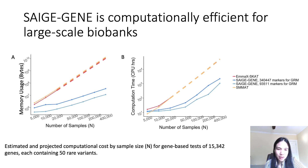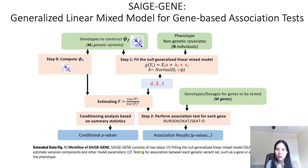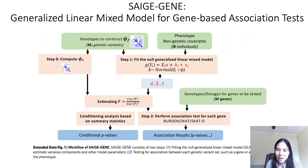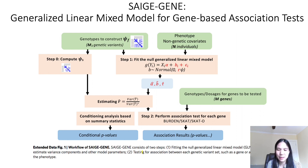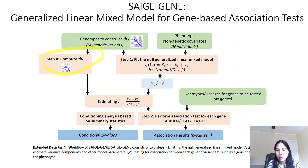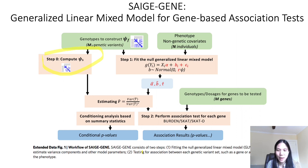One line uses 93,000 genetic markers to construct the GRM, and the other uses 340,000 markers. Similar to SAGE, SAGE gene contains two steps. In step 1, the null linear or logistic mixed model is fit with phenotype, covariates, and genotypes used to construct the GRM on the fly as input. There is one extra step compared to single variant association tests: in step 0, we need to estimate a sparse version of the original GRM, called the sparse GRM, where small values in the full GRM are set to 0. Step 0 only needs to be run once per dataset and the sparse GRM can be reused for different phenotypes.